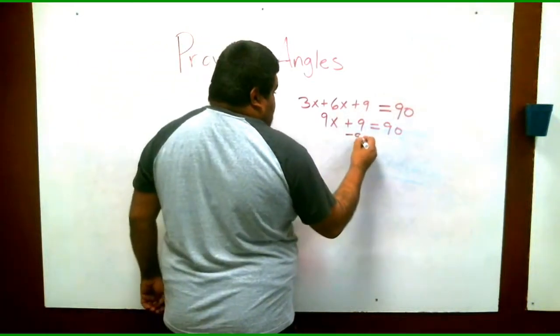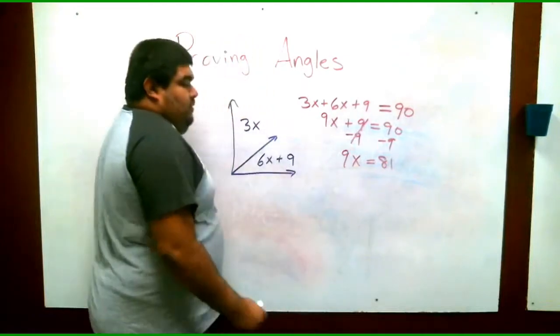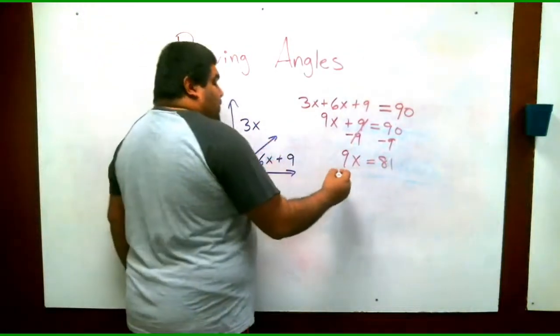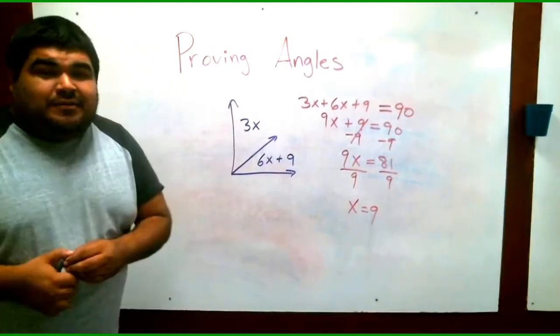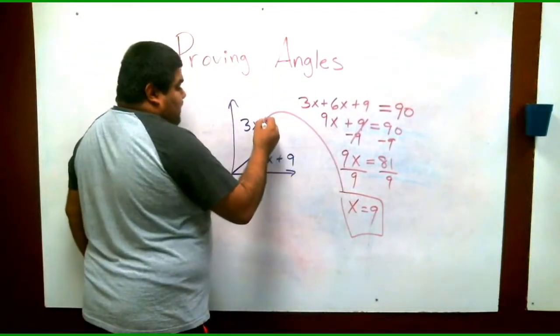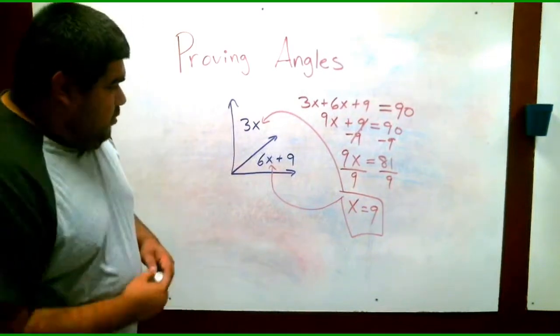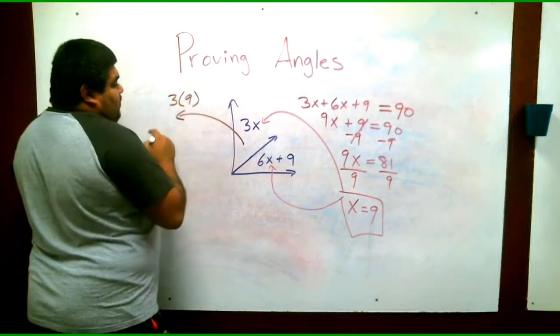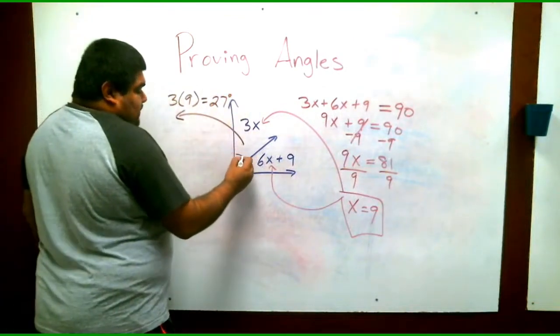So we have to get rid of the 9 minus 9, which is the opposite of plus 9. So we have 9x equals 81. Remember, we're solving for x in order to plug it in here on the equations to solve the angles. So we have to get rid of the 9. So the opposite of multiplication is division. So we have x equals 9. Now that we've found x, which is 9, we can actually plug it in back to the equations. We can plug in x here, and we can plug in x here. So we can say for the first one, we can say 3 times 9, which 3 times 9 is 27. So 27 degrees. So we found this angle. This angle is 27 degrees.